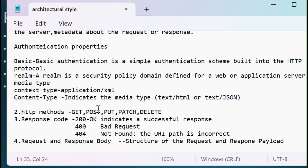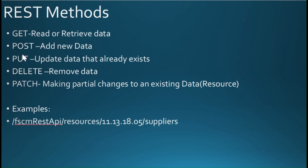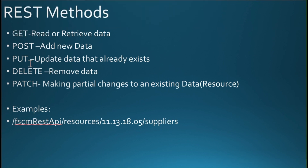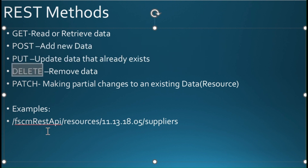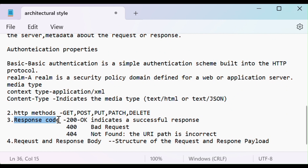In REST, there are different HTTP methods. The GET method is used to read or retrieve data from the server. The POST method is used to create a new resource in the database. The PUT method is used to update an existing resource on the server. The DELETE method is used to remove a resource from the server. The PATCH method is similar to PUT, but is used when you want to make partial updates to a resource.